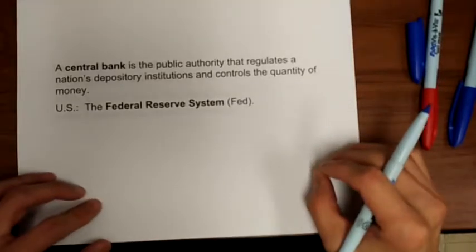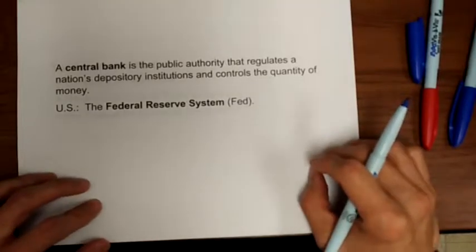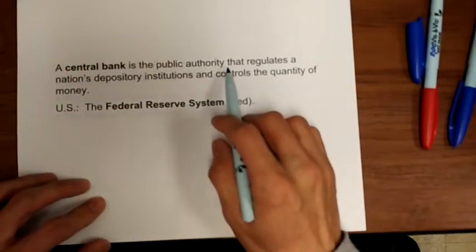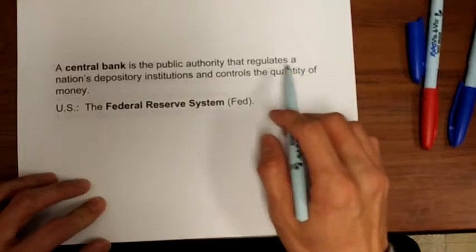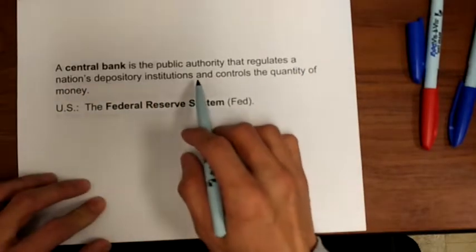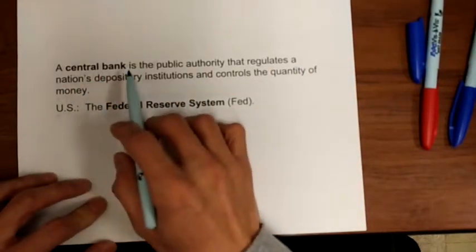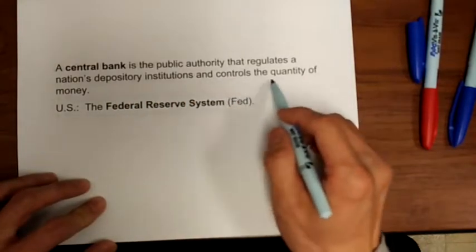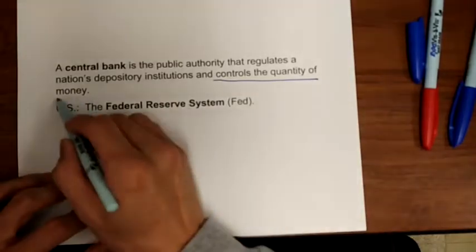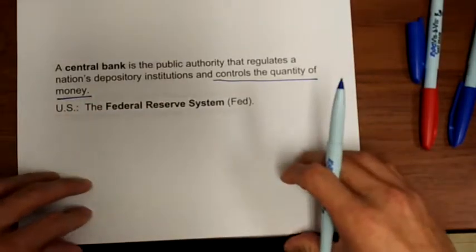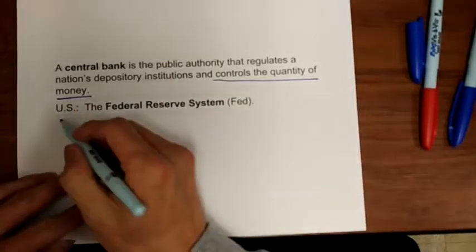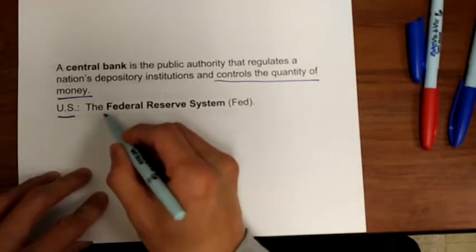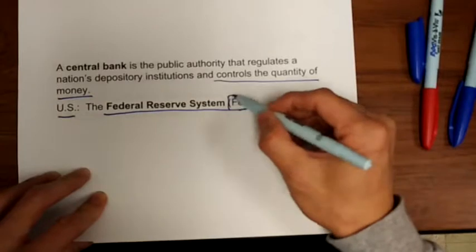Now let's talk about the central bank. The central bank is the public authority that regulates a nation's depository institutions. Therefore, the central bank is the boss of the banks and controls the quantity of money — they are the ones who conduct monetary policy. In the United States, the central bank is called the Federal Reserve System, the Fed.